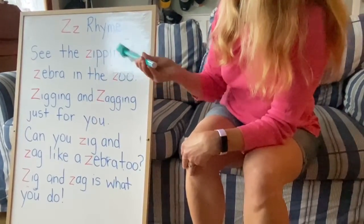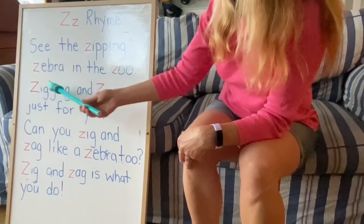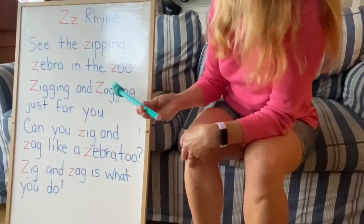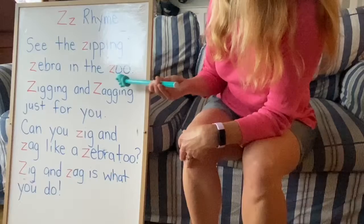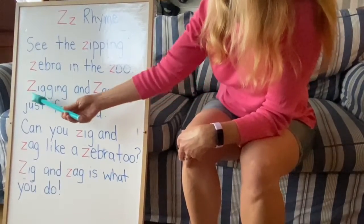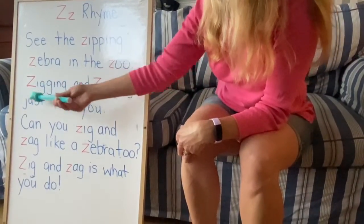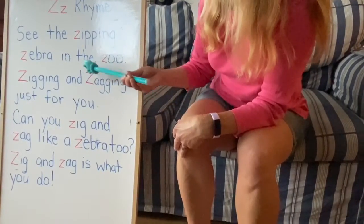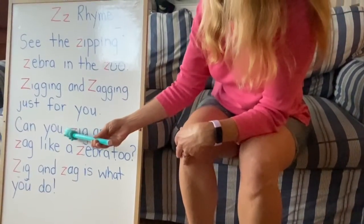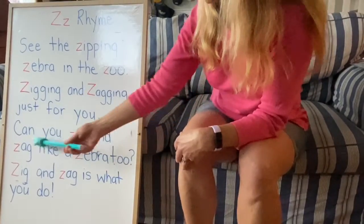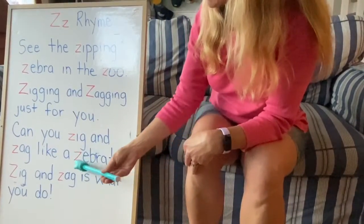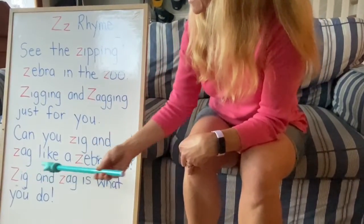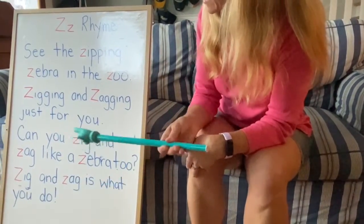Here's one — zipping. And here's one — zebra. And over here — zoo. And there's zigging and zagging. And down here we have zig and zag. And there's zig and zag again.